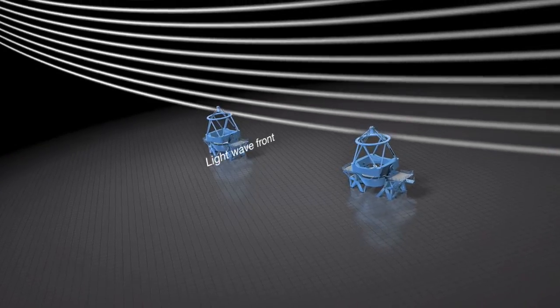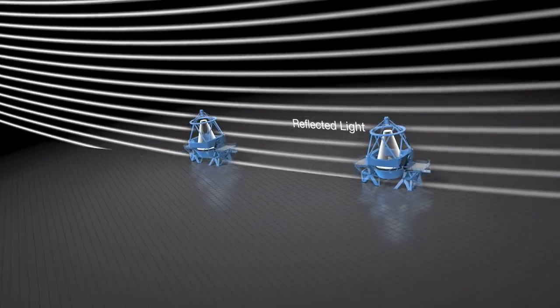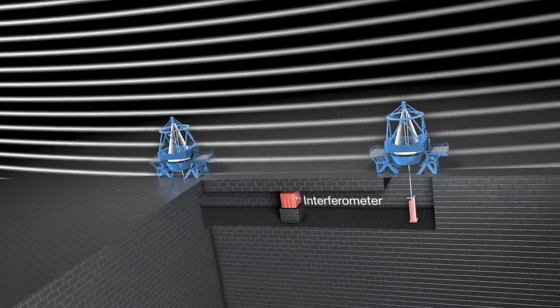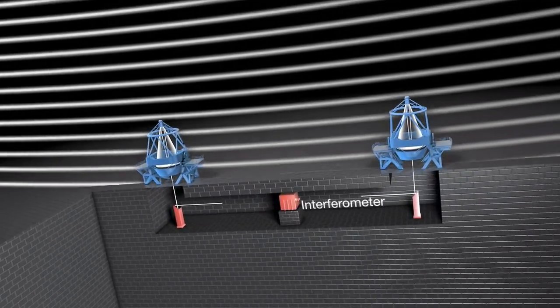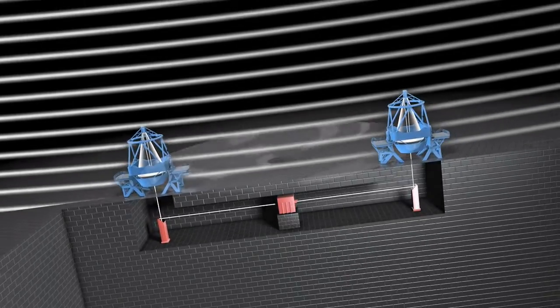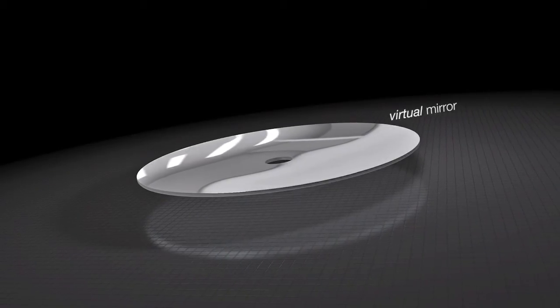And this is where interferometry comes in. Interferometry combines the light received by two or more telescopes that are simultaneously observing the same object. This allows astronomers to pick out details as sharply as if observing with a single telescope whose mirror has a diameter equivalent to the largest distance between the telescopes.